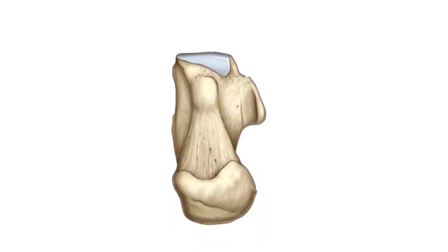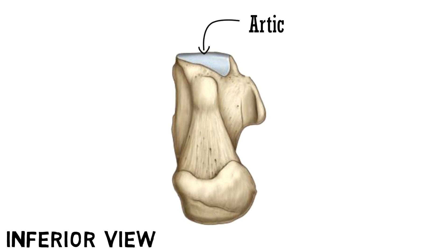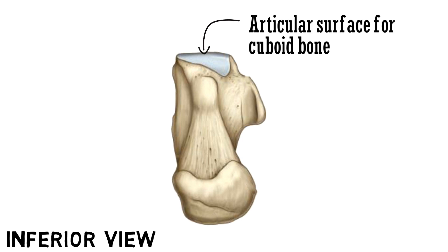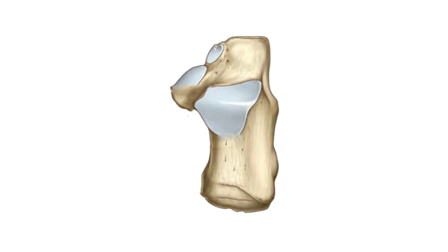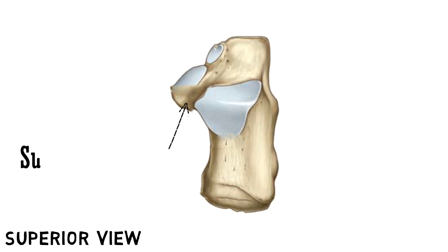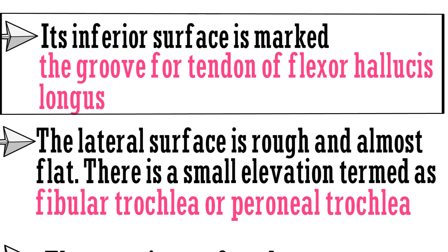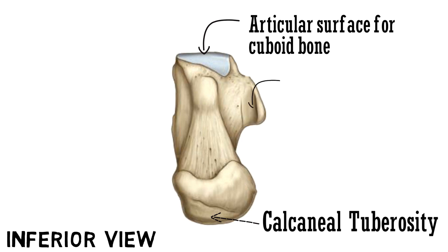Let's have a look. This is the inferior view of the calcaneus. The shaded part is the articular surface for the cuboid bone. This is the calcaneal tuberosity formed by the posterior surface. Coming to the superior view, this prominence is the sustentaculum tali formed by the medial surface. On the inferior surface of the sustentaculum tali there is a groove for the tendon of flexor hallucis longus, visible in the inferior view.